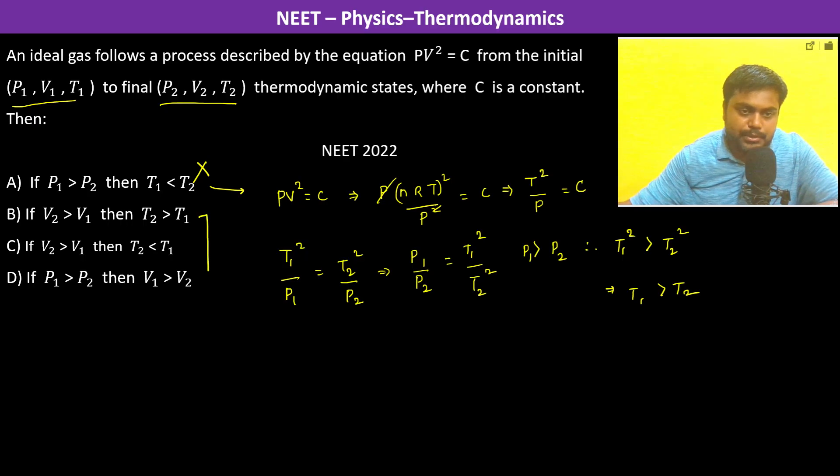Now, for B we move on. V2 is greater than V1. We substitute P by NRT by V into V square, this is going to be constant. That means TV is equal to constant.